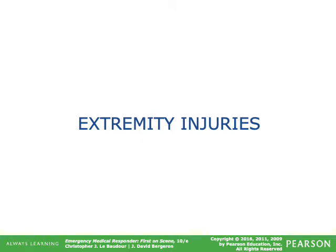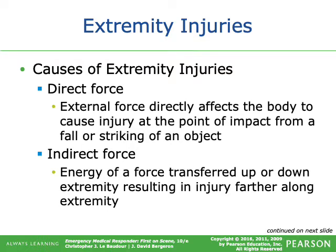Causes of extremity injuries: Direct force is an external force that directly affects the body, causing an injury at the point of impact — from a fall or striking of an object. Indirect force is the transfer of a force up or down the extremity, resulting in injury farther along the extremity. An example of direct force would be someone hitting an arm with a baseball bat and breaking a bone. Indirect force: a car striking a tree, your foot pressing into the floor causing a tibial fracture.